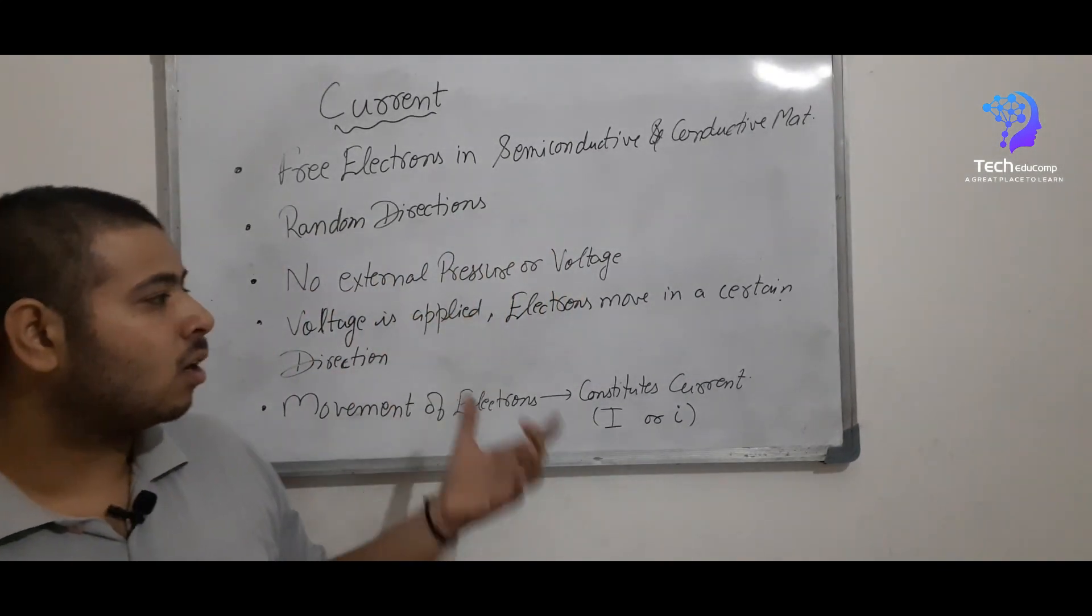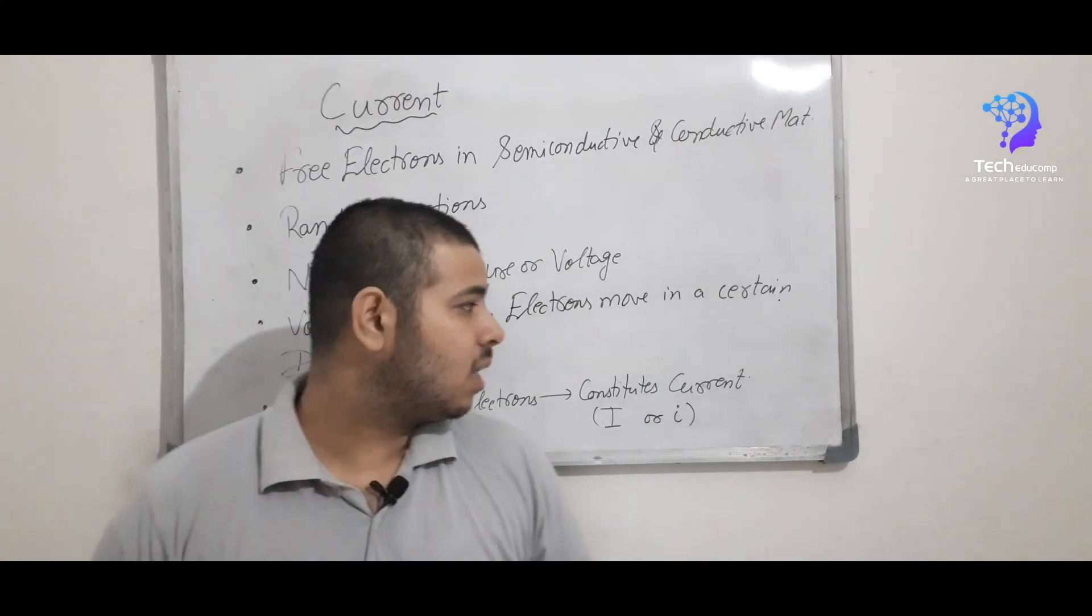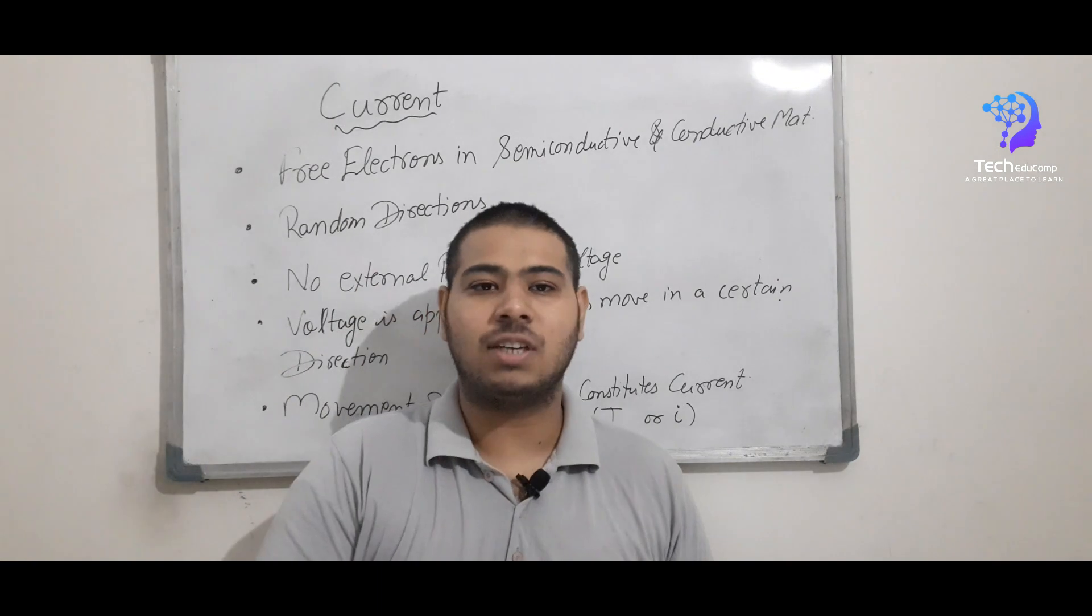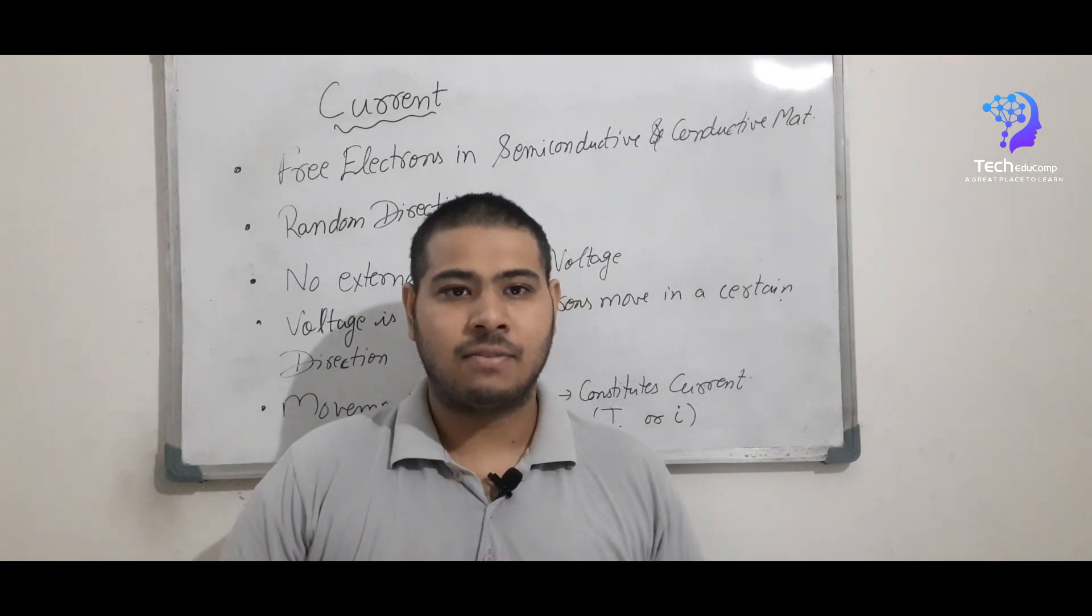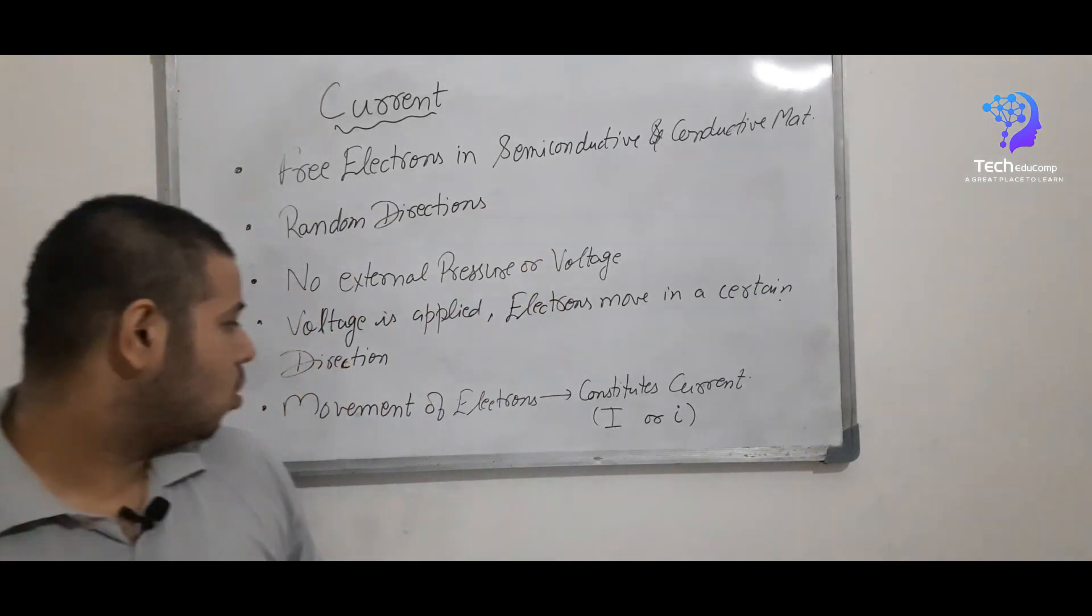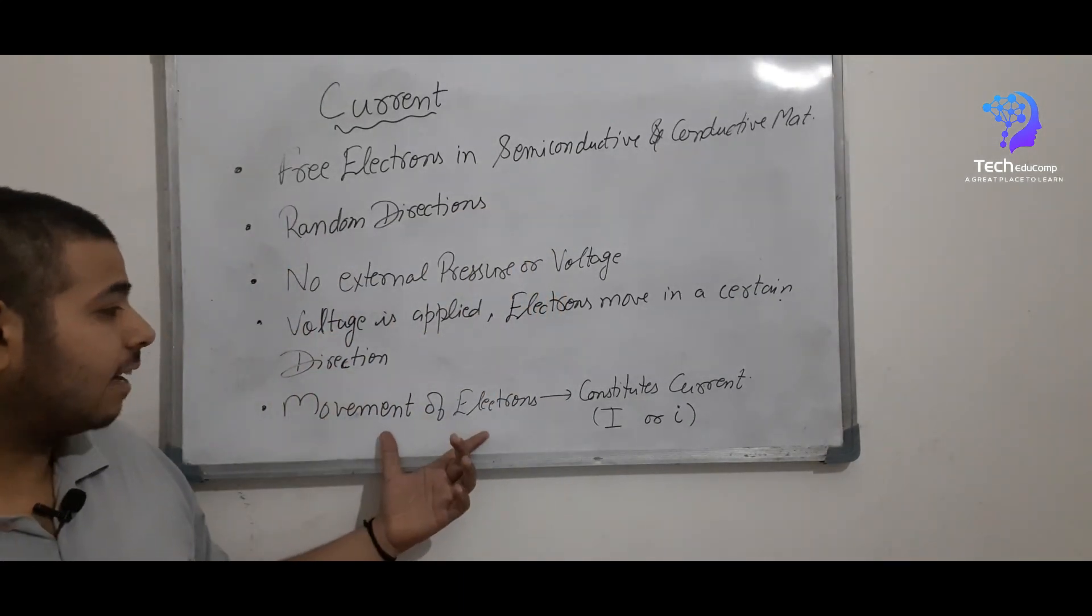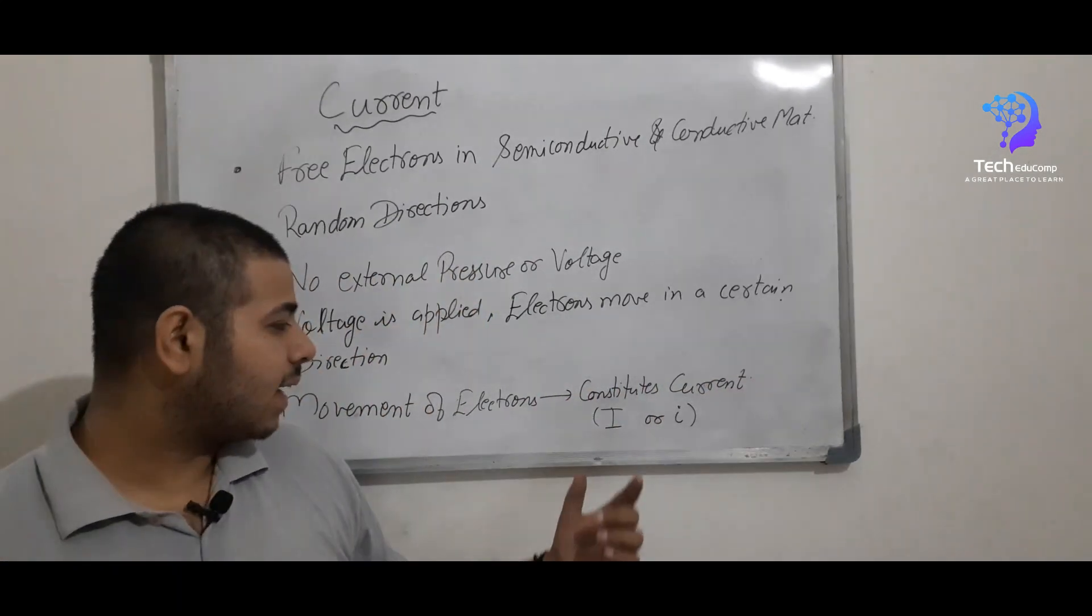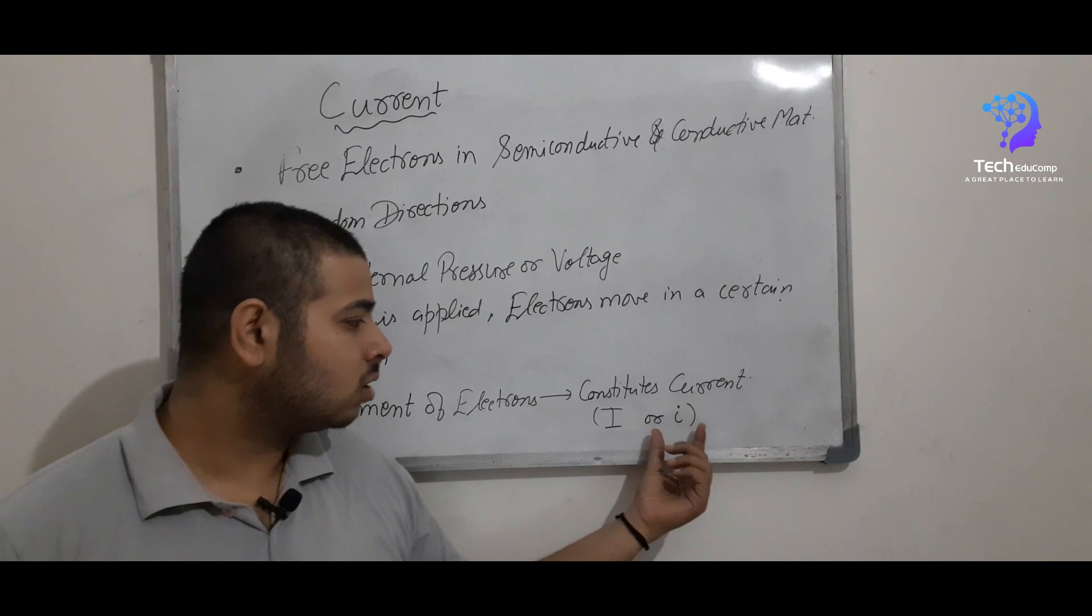So to constitute some current in that material, when a voltage applied of a certain polarity, the electrons move in that direction either from positive to negative or negative to positive, which is based on how we are applying the voltage to it. So the movement of these electrons constitute current, which is denoted as capital I or small i.